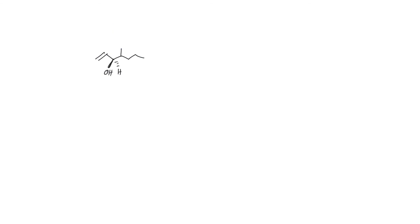Let's go on to a third example. We have a similar situation, except now the branch point is on the rightmost substituent. I'll make my list: the alkene side is CCH — it counts the end carbon of the alkene twice, then the hydrogen. For the branched carbon, it has a methyl group, a three-carbon chain, and a hydrogen attached. In this case I have the same list, so I need to go further.